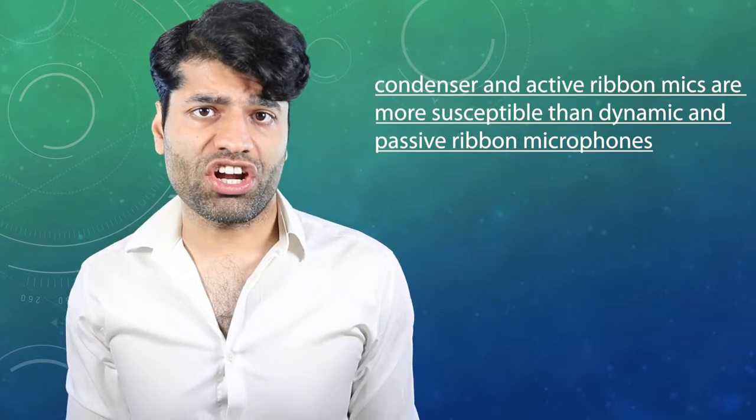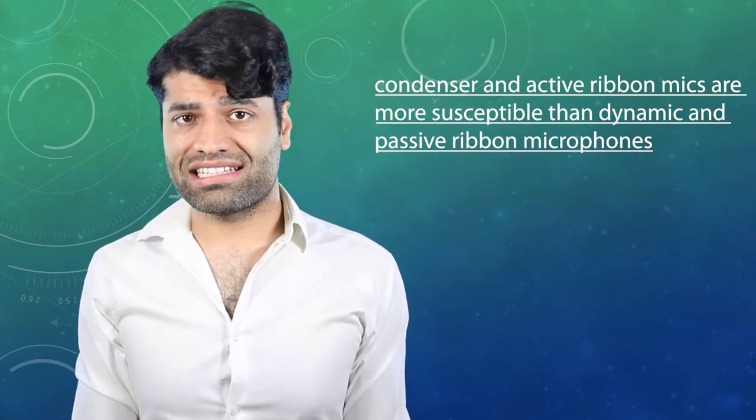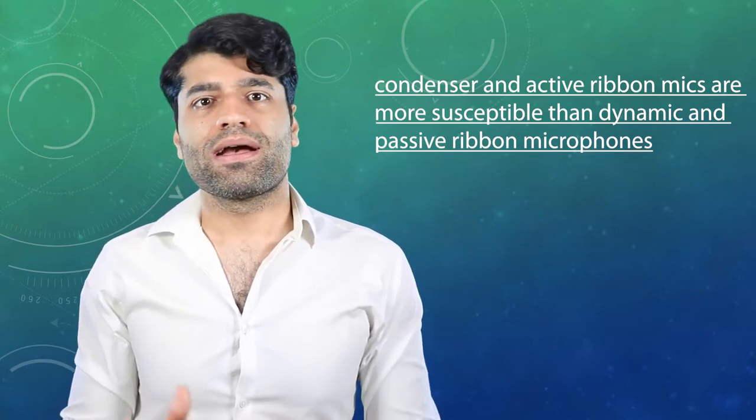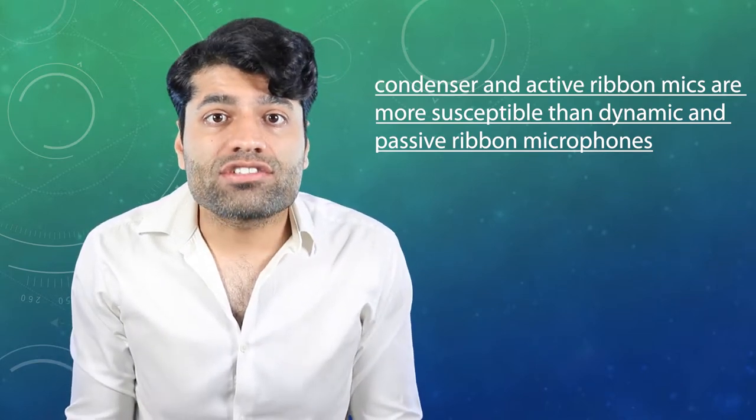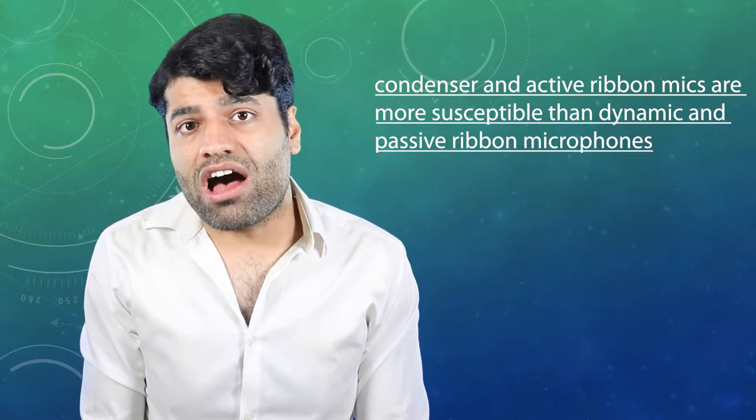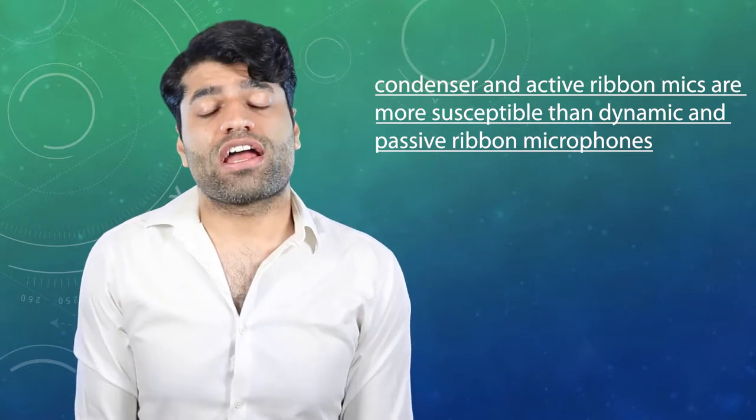Electronic circuitry of condenser and active ribbon mics get overloaded more easily and hence are more susceptible to sound pressure than dynamic and passive ribbon microphones. But what do we mean by distortion and how is it measured?